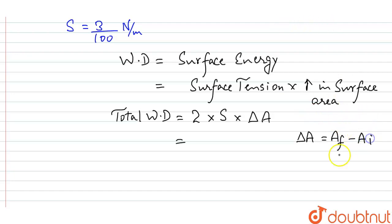So here, A final is what? 4πr². And A initial is 0, as the radius is very low at the initial stage.